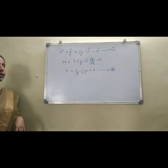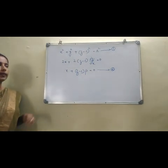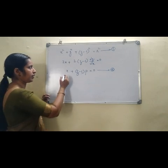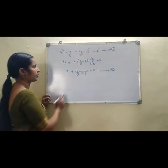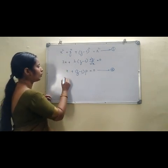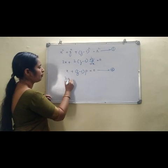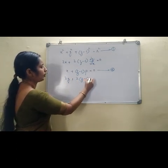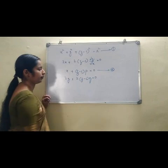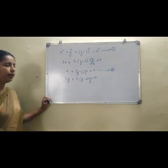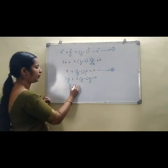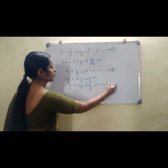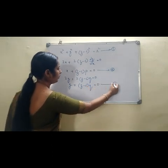Again, differentiate equation 1 partially with respect to y, keeping x as a constant. Derivative of x² is 0, derivative of y² is 2y, and derivative of (z − c)² gives 2(z − c)q = 0. Removing the 2: y + (z − c)q = 0. That is equation number 3.